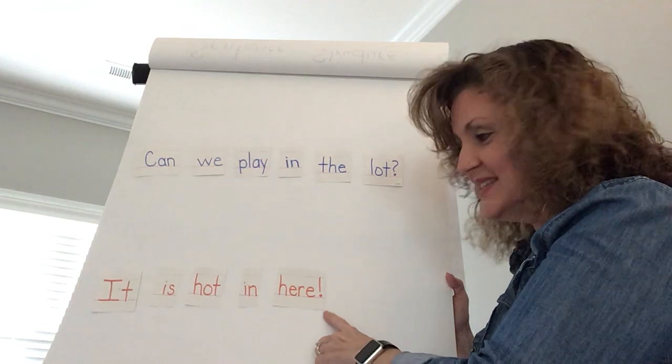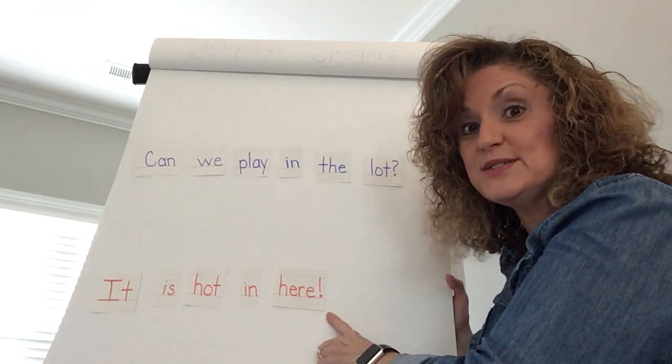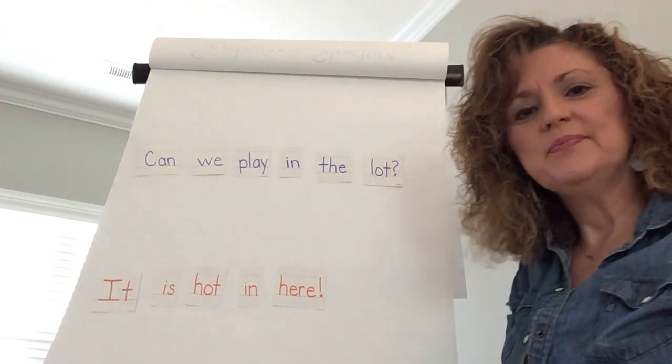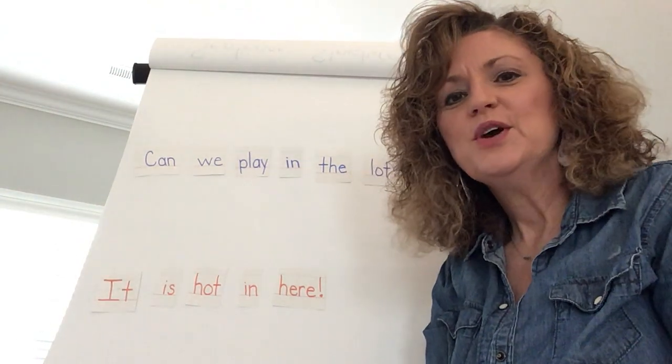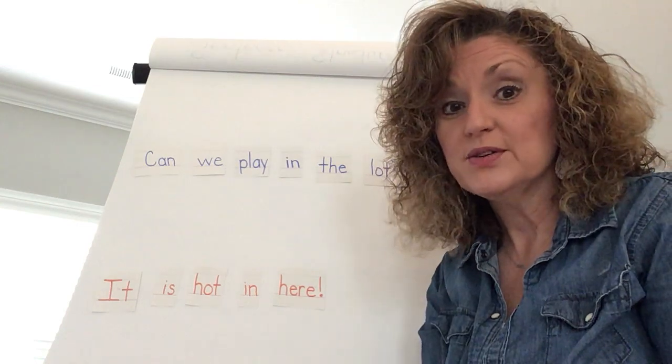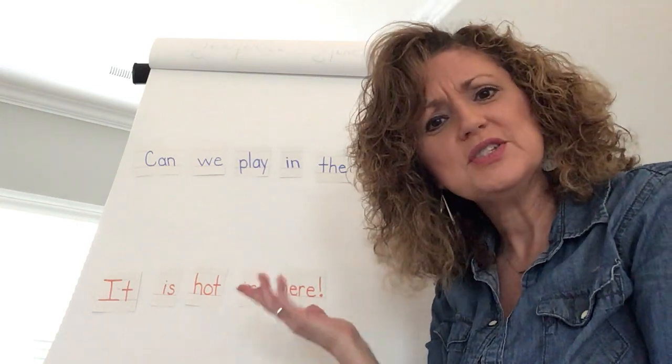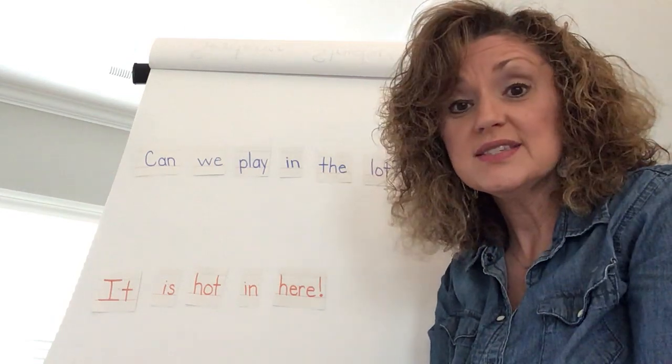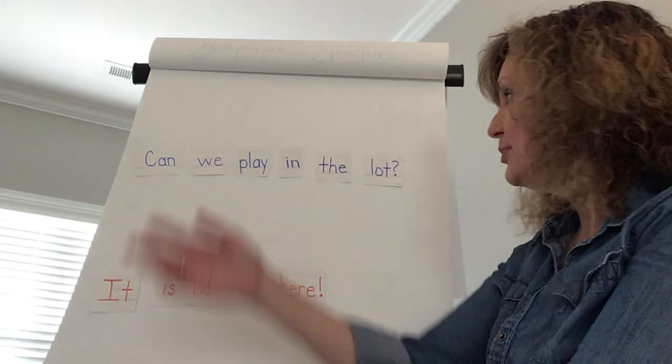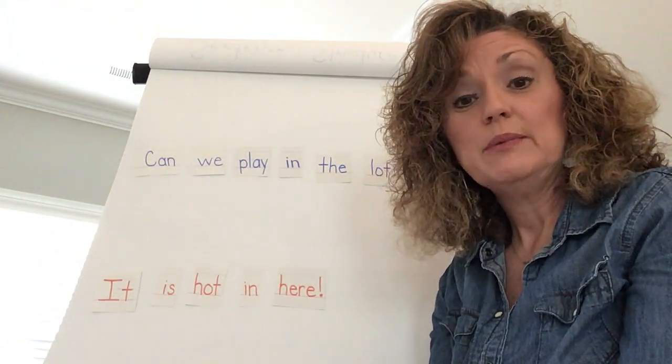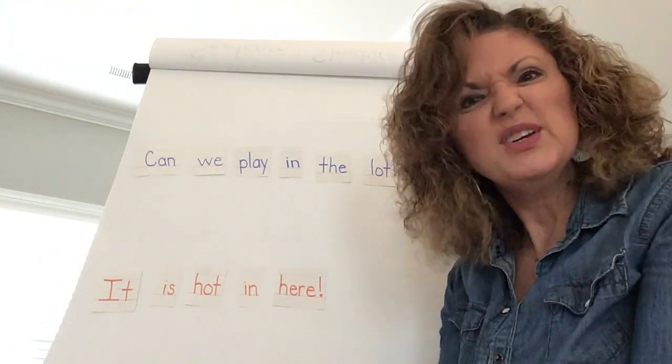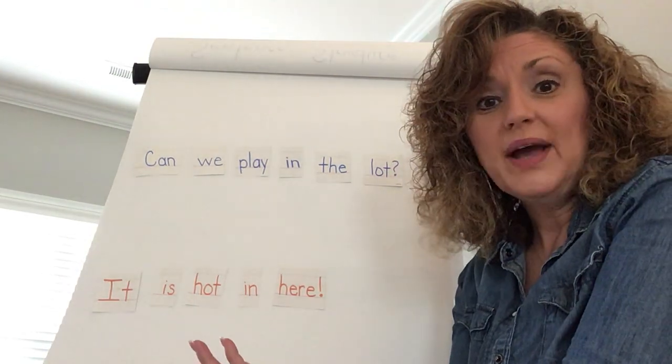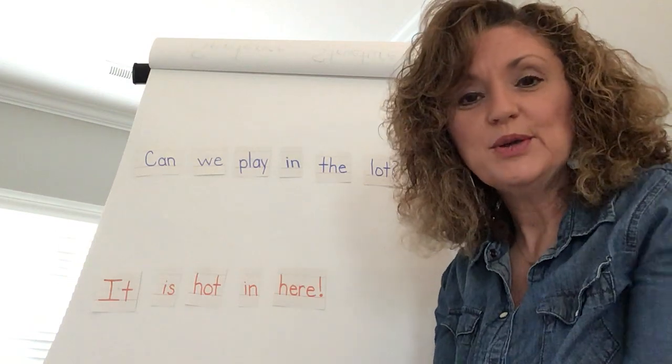So let's reread it because my voice has to show some excitement because I'm using an exclamation point. It is hot in here. Great job. So I have a couple challenges. For some of my friends who are a little bit better writers, I would like for you to add some adjectives to some of these sentences. What can you tell about the cat in the first sentence? Or the dog in the second sentence? And can we play in the lot? What are we going to play in the lot? Can we play kickball in the lot? So you can add some stuff to kind of juice up some of the sentences. It is hot in here. Why is it hot in here? Or what is it about you that makes it hot in here?